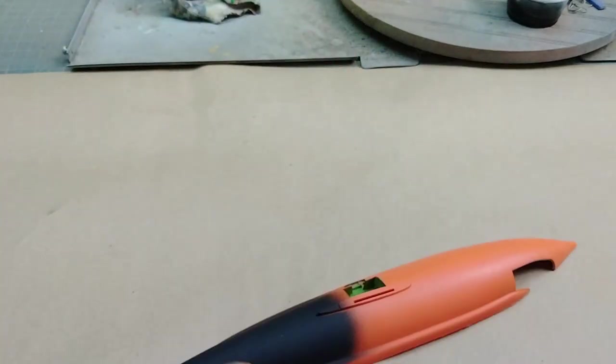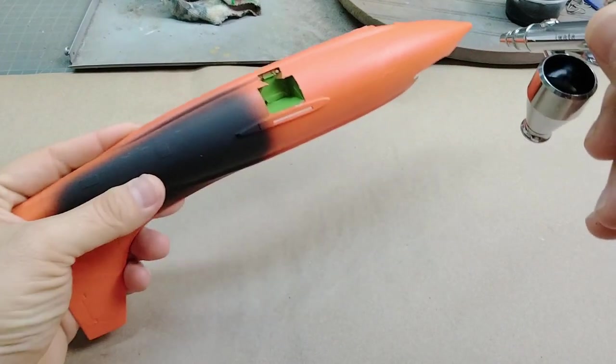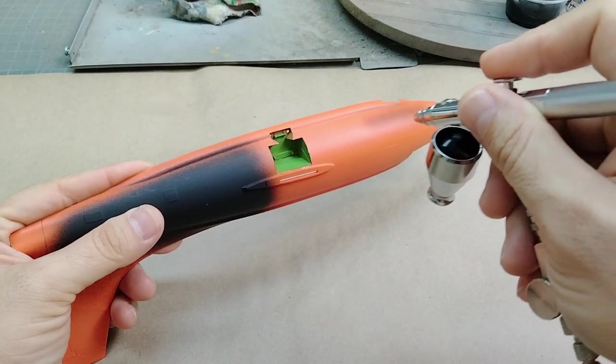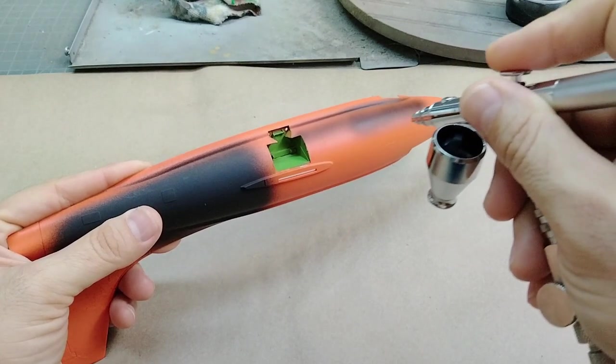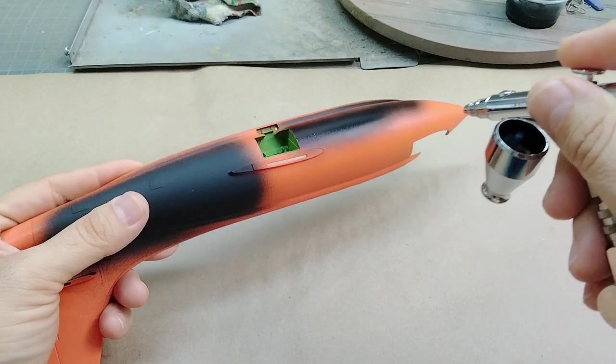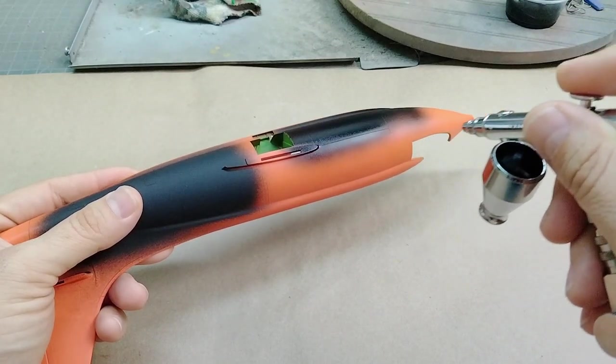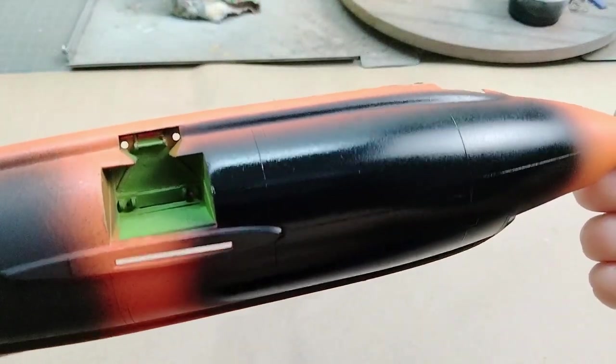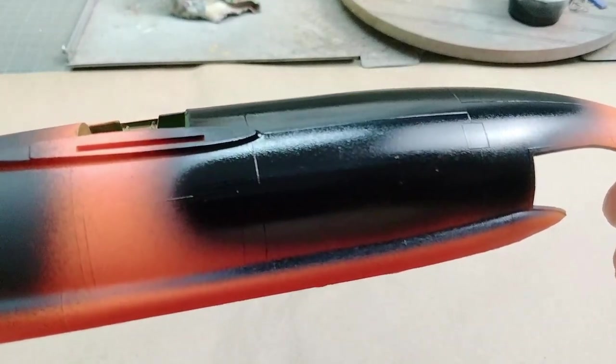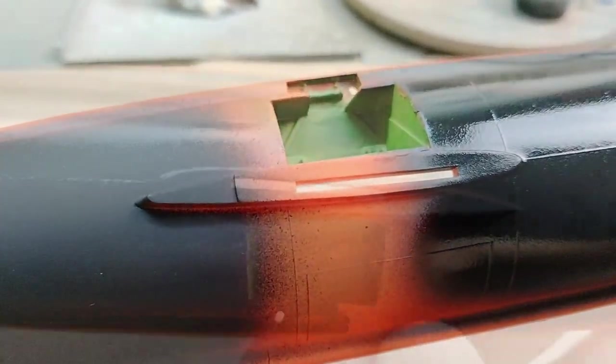We can't forget about testing this airbrush on an actual model part, seeing what kind of spray pattern and overspray it leaves and how fine the particles are as you go further out from the area that you're working on. And now we can compare this against the other airbrush just to see how much smoother the paint is once dry.